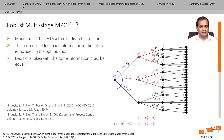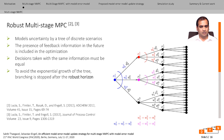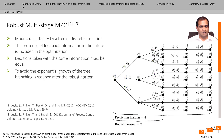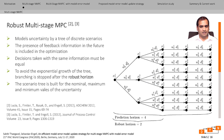One could clearly see that the scenario tree of the multi-stage NMPC grows exponentially along the prediction horizon, and this can be avoided using the so-called robust horizon. The uncertainty realization is assumed to remain constant after the robust horizon. In practice, in the presence of continuous-valued uncertainty, the scenario tree is often built for the minimal, nominal, and maximum values of the uncertain parameters.